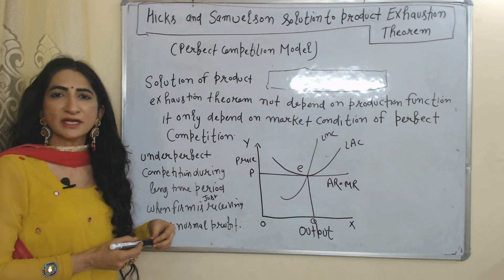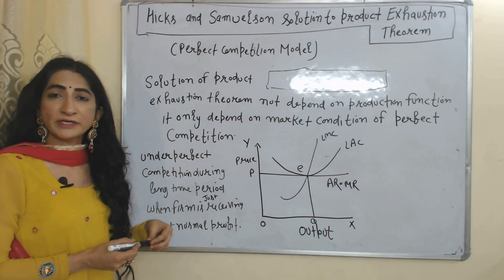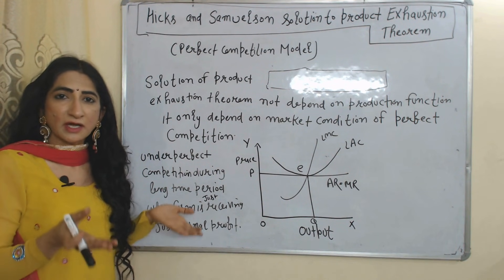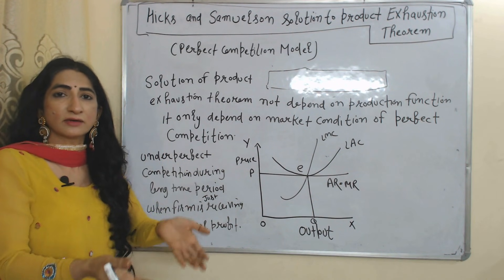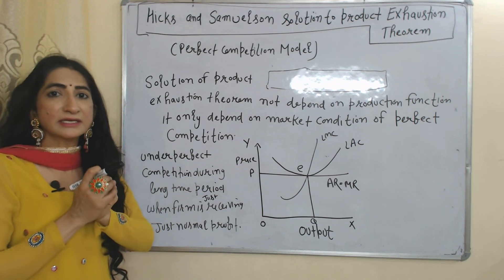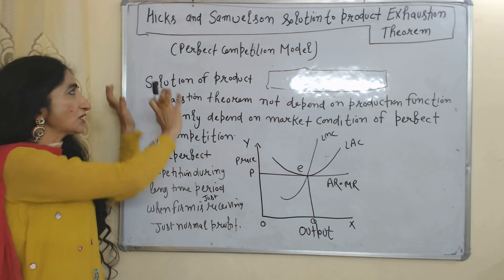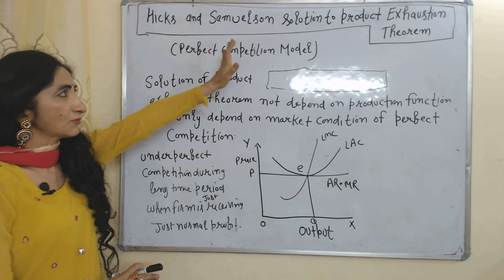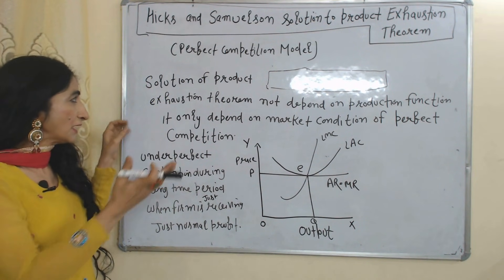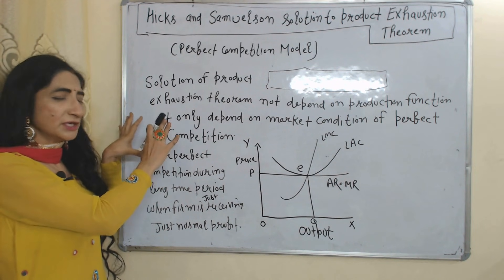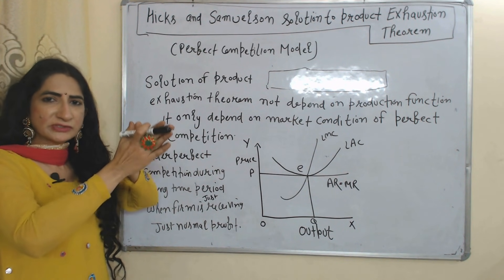Wicksteed's solution is not a proper solution because it is based on linear homogeneous production function, but all production functions are not linear homogeneous. We don't always get constant returns to scale — we mainly get diminishing returns to scale. That is why we are now going to talk about Hicks and Samuelson's solution to the Product Exhaustion Theorem.